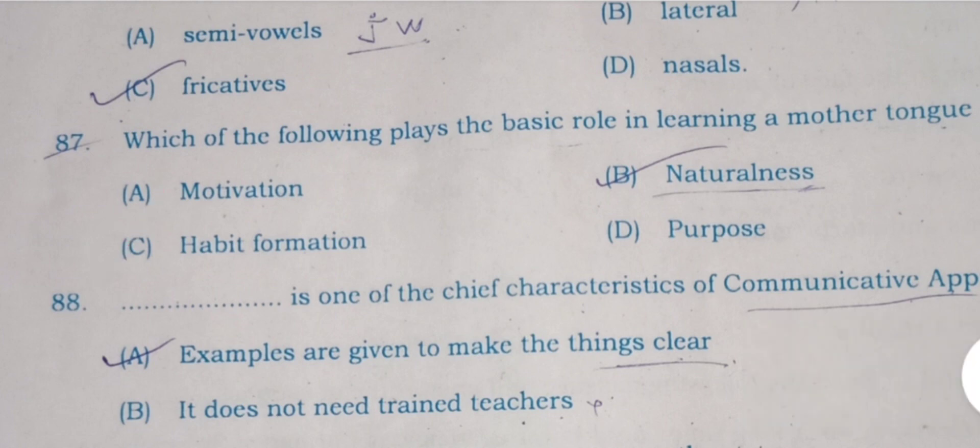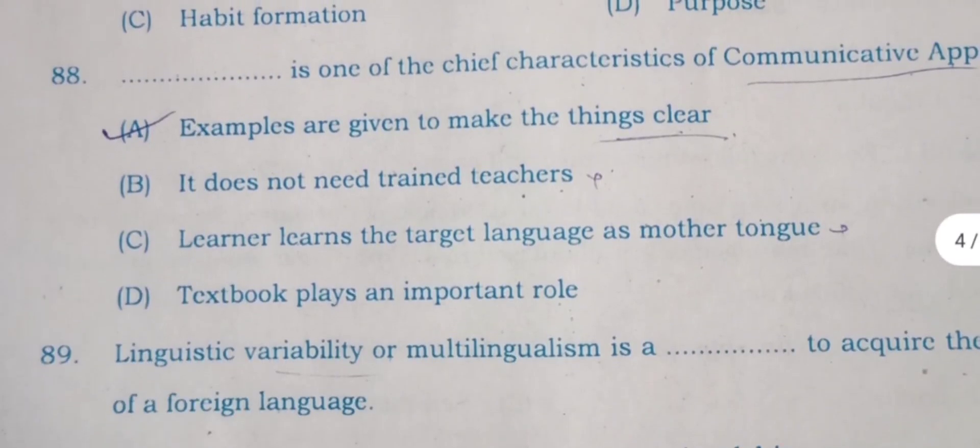Question number 87: Which of the following plays the basic role in learning a mother tongue? A) motivation, B) naturalness, C) habit formation, and D) purpose. Here C is the right answer: habit formation. Some examiners may give its answer as naturalness also, but according to me habit formation is the right answer.